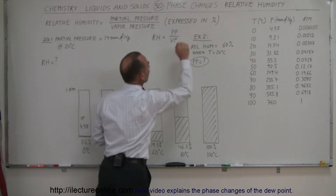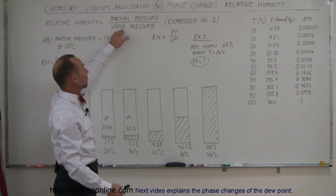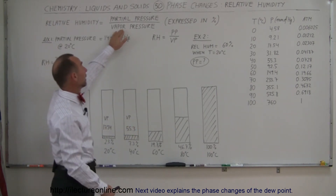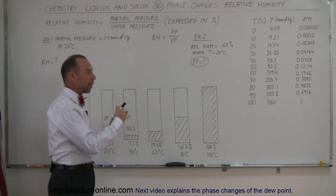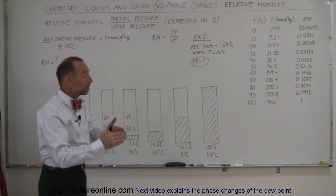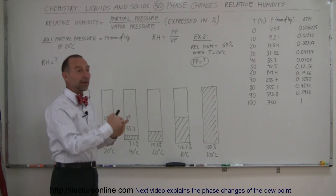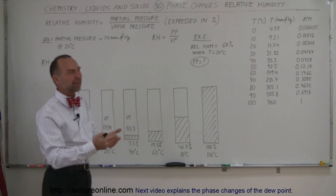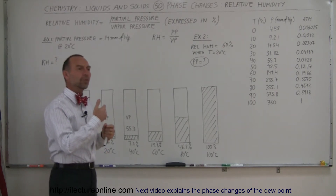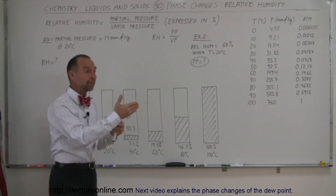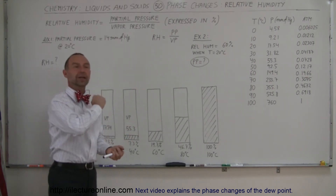Usually we express it in percent. So let's say if the vapor pressure is 100 millimeters of mercury — that would be the maximum pressure the water vapor can have at a particular temperature — and the partial pressure is only 50 millimeters. 50 divided by 100 is only half, that's 50%. It's what is the amount of pressure attributed to water vapor divided by how much it could have if it was fully saturated.